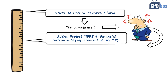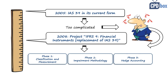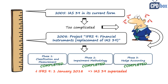Therefore in 2008, the IASB decided to rewrite IAS 39 and launched a project for its replacement. The result of this project is the completely new standard on financial instruments, now known as IFRS 9. The replacement process had three phases — all now completed — and IFRS 9 is effective for periods starting on or after 1st January 2018, meaning IAS 39 was superseded.